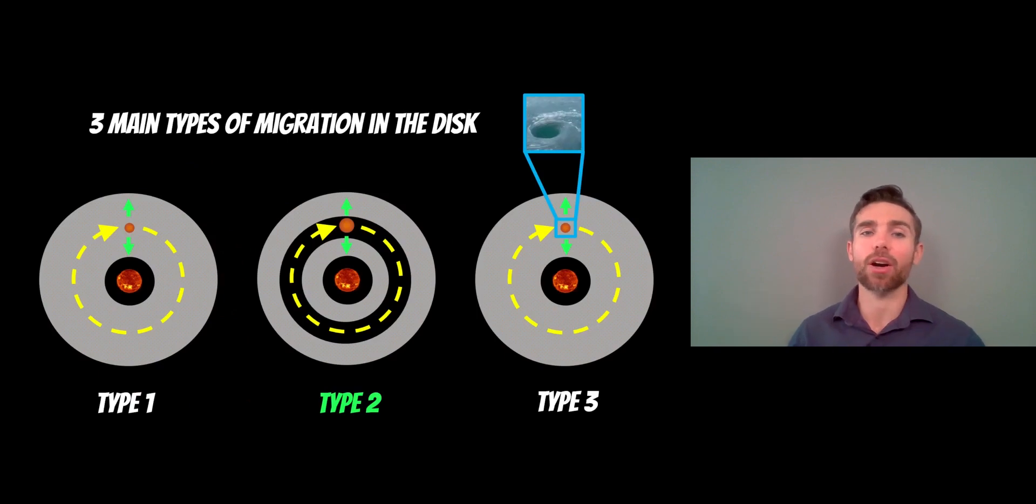Three main types of migration in one of these disks. Type 1 concerns small planets. When I say small we're looking at terrestrial planets, Earth size, Mars, that sort of size planet. Then you have type 2. Once they get to a certain size they're big enough and they create a gap in that disk.